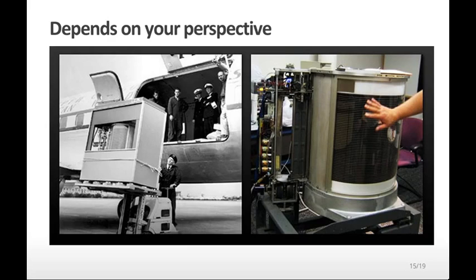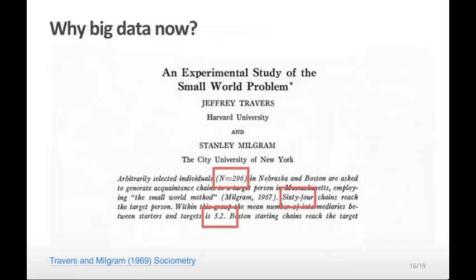So why are we talking about big data now, if it's always been a matter of perspective? Here's an example. This is a study that was performed in 1969, where 296 random individuals in Nebraska and Boston were asked to take a letter and mail it to a friend, who would mail it to a friend, who would mail it to a friend, with the eventual goal of ending up at one target individual in Boston, Massachusetts. They collected 64 such mail chains, and they calculated that the average number of people in between the original person that the letter started with and the target person was 5.2. This number got rounded up and became the usual term 6 degrees of separation that you may have heard about before.